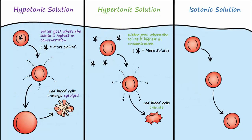Another way to remember which direction water would go is to remember that it will always go where there are more solute particles, or more salt. It's only if we put cells into an isotonic solution — iso means same — that would result in the same amount of water leaving the cell as enters, resulting in no change in size of the cell. An isotonic solution would have a concentration of about 300 milliosmolar.